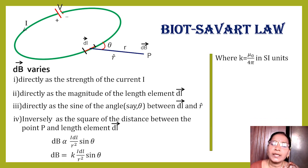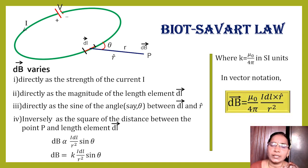But what is K? K is equal to μ₀ by 4π in SI units. So, in vector notation, we can write that dB is equal to μ₀ by 4π I dL cross R̂ vector divided by R squared.